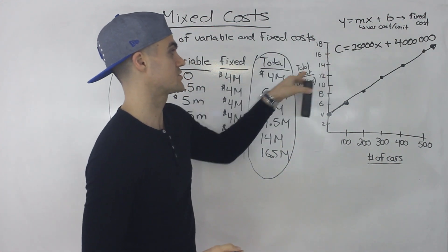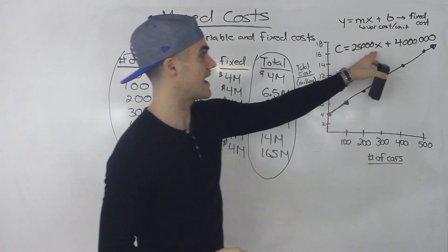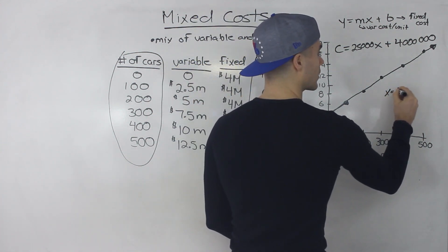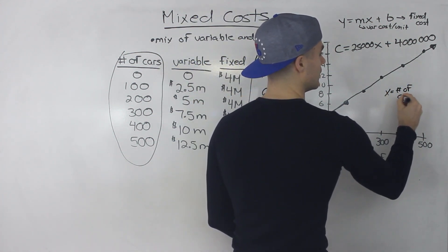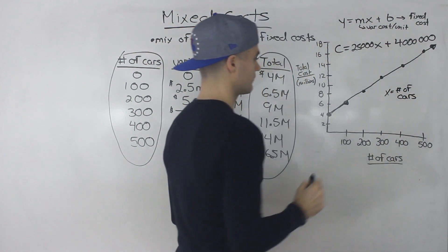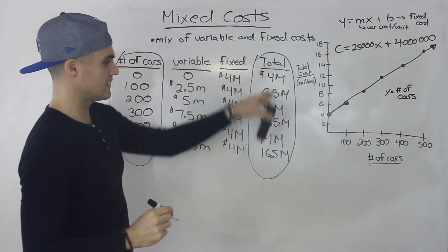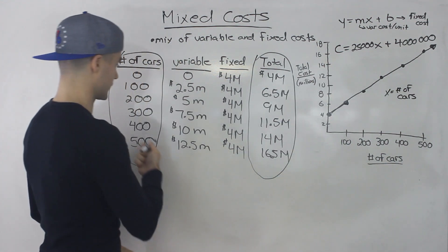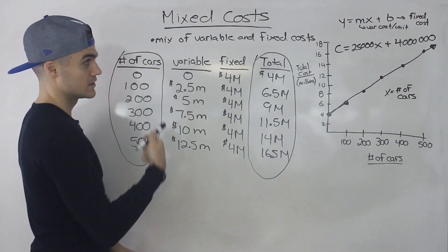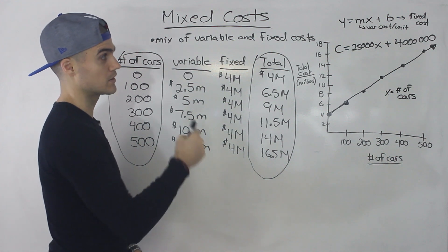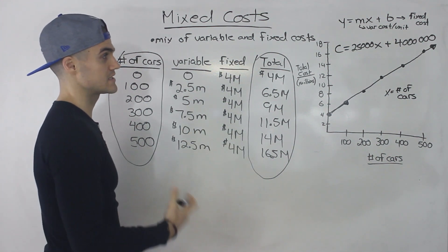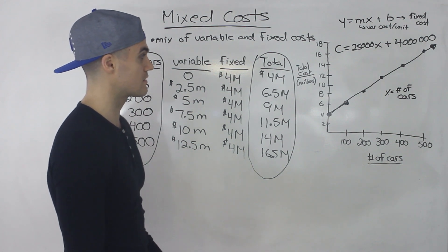And instead of putting y, I put a c just to represent the cost. And then this x here, it represents the number of cars. So to get any of these values, you could actually test this equation. So we could plug in, for example, 400 there. So 25,000 times 400 plus 4 million, and it should give you 14 million. You could always test the equations that you get.